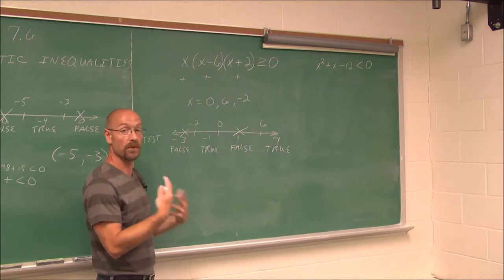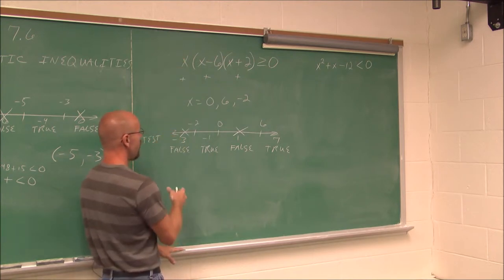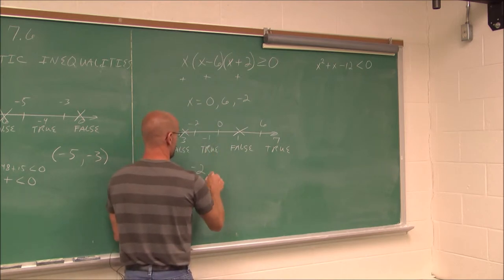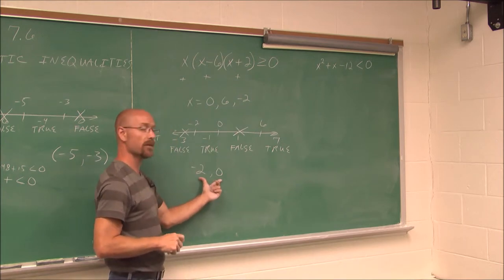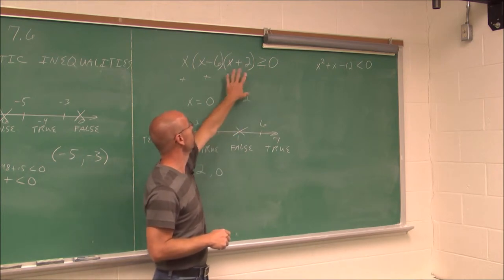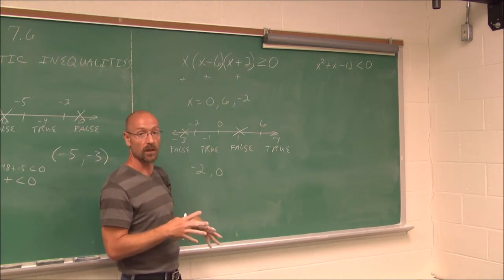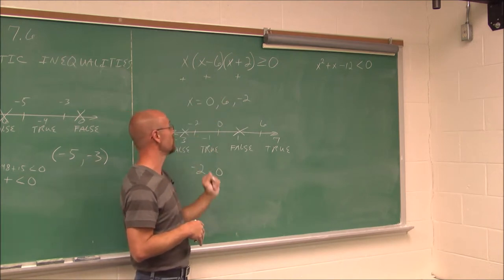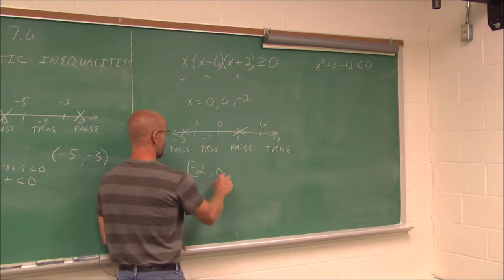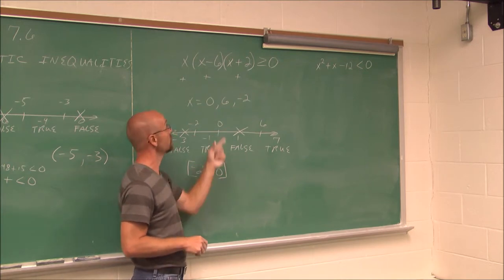To put the answer in interval notation — the standard form for these inequalities — I find my true intervals: from negative 2 to 0. Now I have to determine whether the endpoints are included. Since they were critical points and the inequality could be equal to 0 — and noting there are no domain restrictions, because there are no roots and no x's in the denominator — there are no restrictions, so it can include the endpoints.